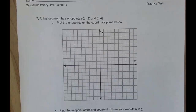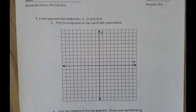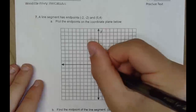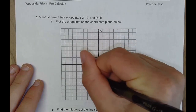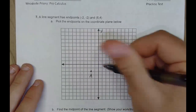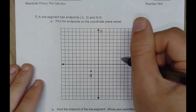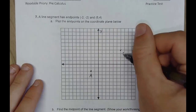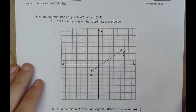Number 7. A line segment has endpoints negative 2, negative 2 and 6, 4. Plot the endpoints on the coordinate plane. Negative 2, negative 2 — label it A. Then 6, 4 — count over to 1, 2, 3, 4, 5, 6 and up 1, 2, 3, 4 — label it B.